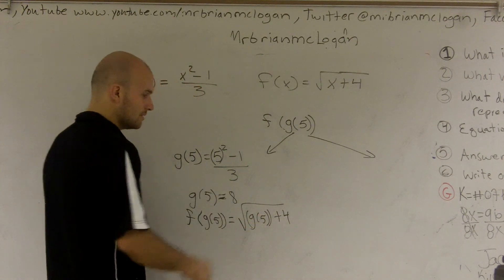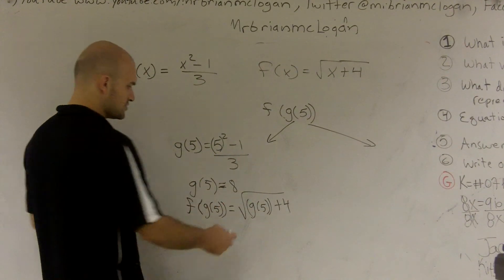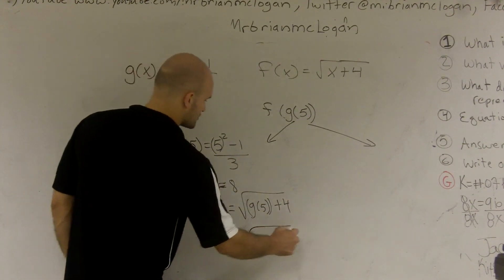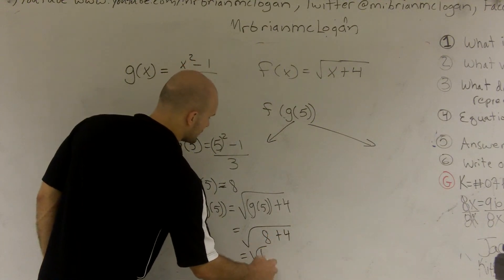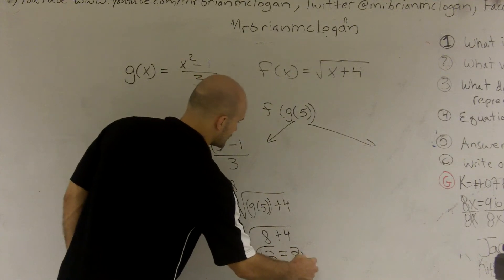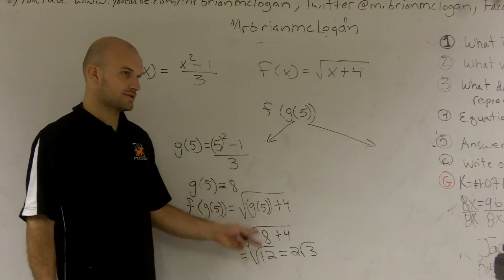Well, what's g of 5 equal? g of 5, we said, equals 8. Right? So you can just plug it in. Square root of 8 plus 4, which equals the square root of 12, which equals 2 radical 3. Right? You see what I did?